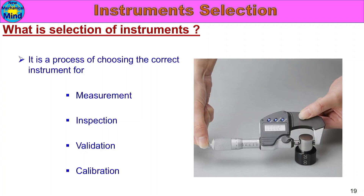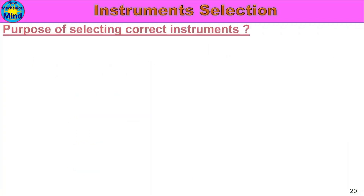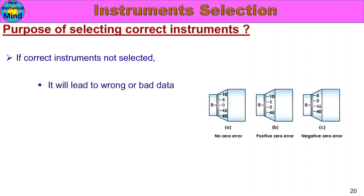Inspection, validation, and calibration are important purposes for instrument selection. Using the wrong instrument will lead to wrong or bad data. We need accurate inspection to get reliable results.